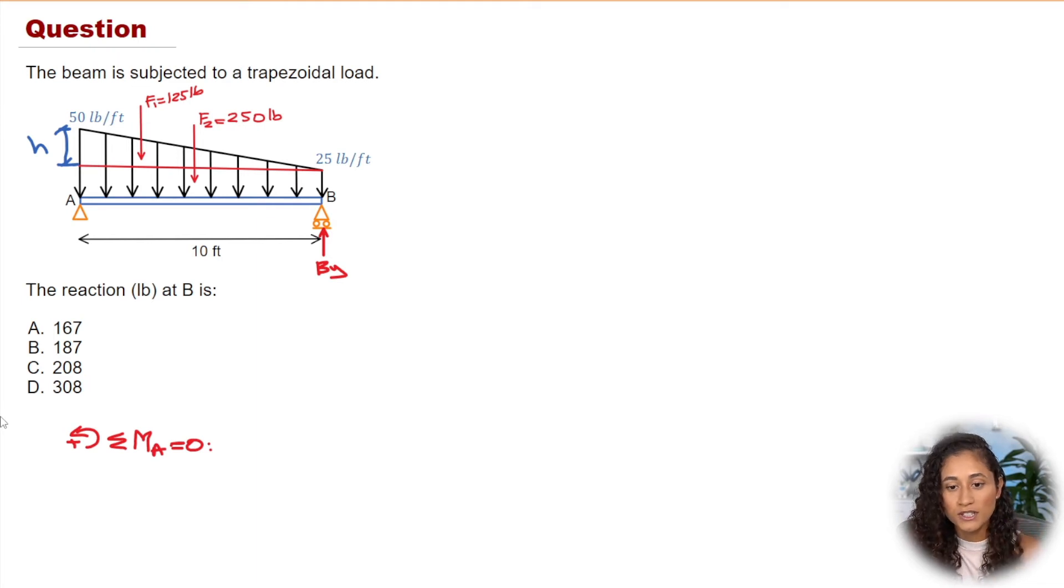Okay, so first thing here, let's add the reaction, so we're going to do 10 feet, which is the moment arm for the By, and then we're just going to multiply by By. Now note guys how this term here is going to be positive because By is going up and our moment is counterclockwise, so they're going in the same direction.